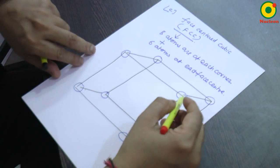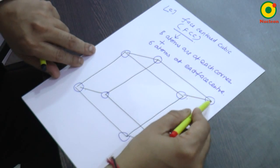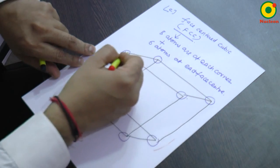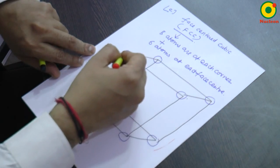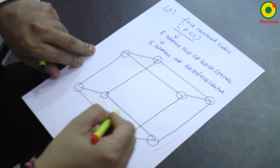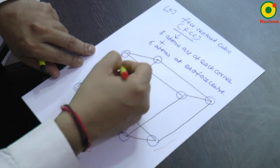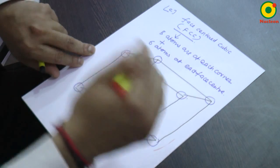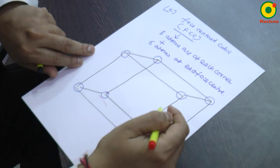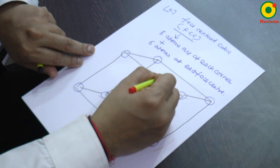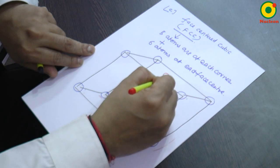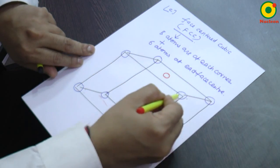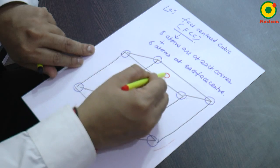Now what is called a face? A face is this part. There are six faces in the cube — you can see face one, two, three, four, five, and six. So we are going to place six atoms at each face center: one atom at this face center.